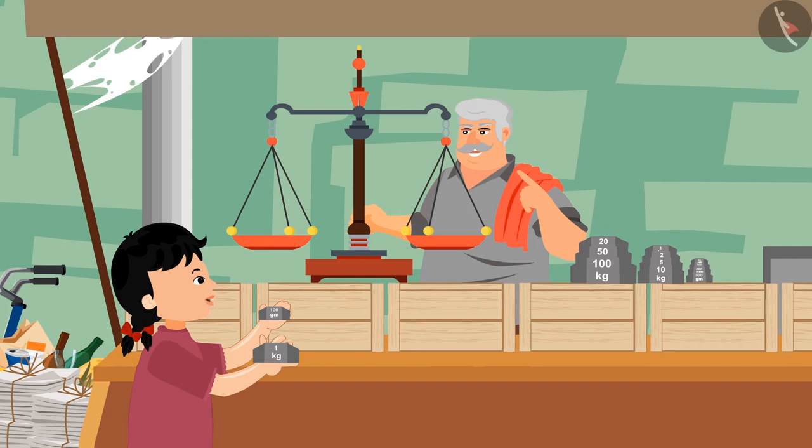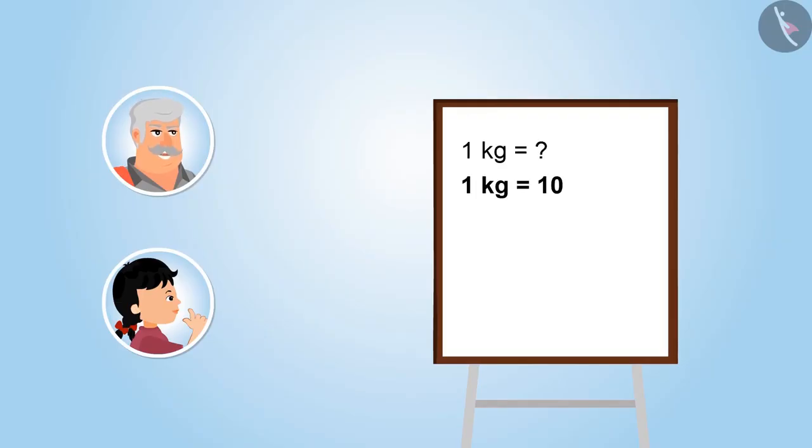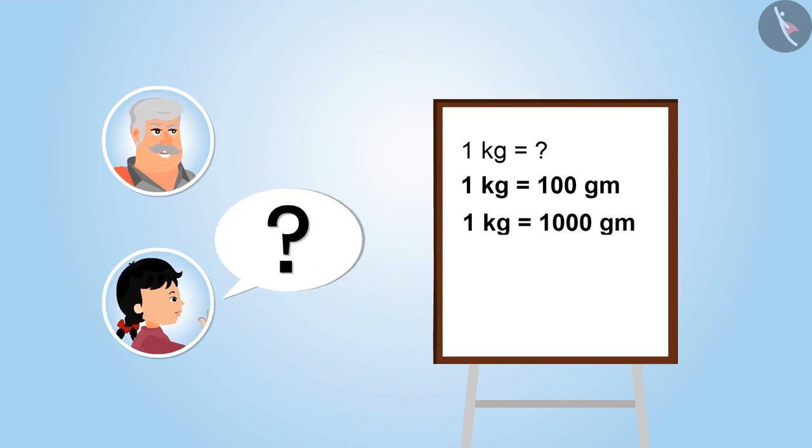But how is this possible? Because you are forgetting that 1 kg is equal to 1,000 grams, not 100 grams. Oh yes uncle, how did I forget this? 1 kg is equal to 1,000 grams, not 100 grams.